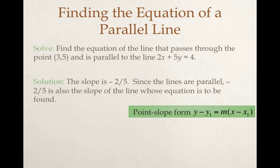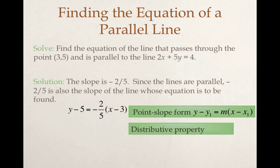I'm going to use point-slope form in this example. However, as I told you already, you can use slope-intercept form, the y equals mx plus b. But you'll see, I'll plug in my 5 for the y1, 3 for the x1, and negative 2 fifths for the slope.